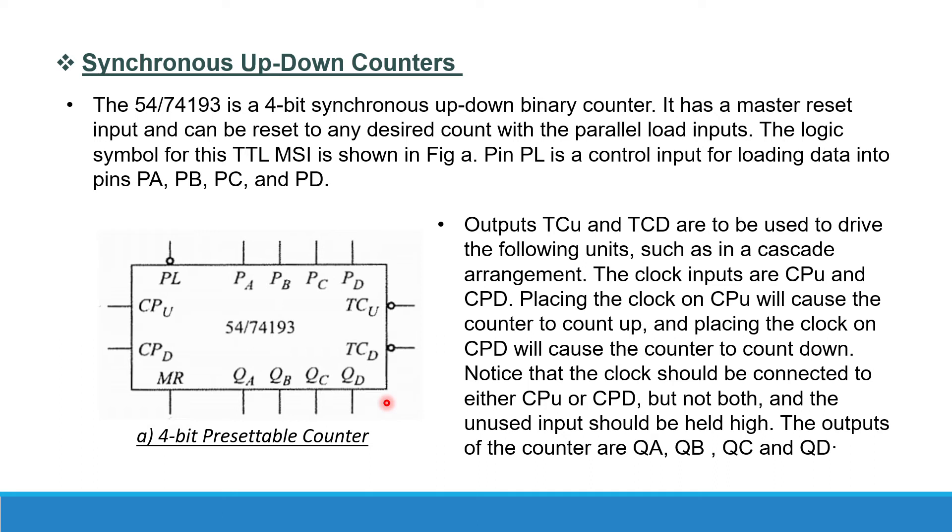The clock inputs are CPU and CPD. Placing the clock on CPU will cause the counter to count up and placing the clock on CPD will cause the counter to count down. Notice that the clock should be connected to either CPU or CPD but not both. The unused input should be held high.